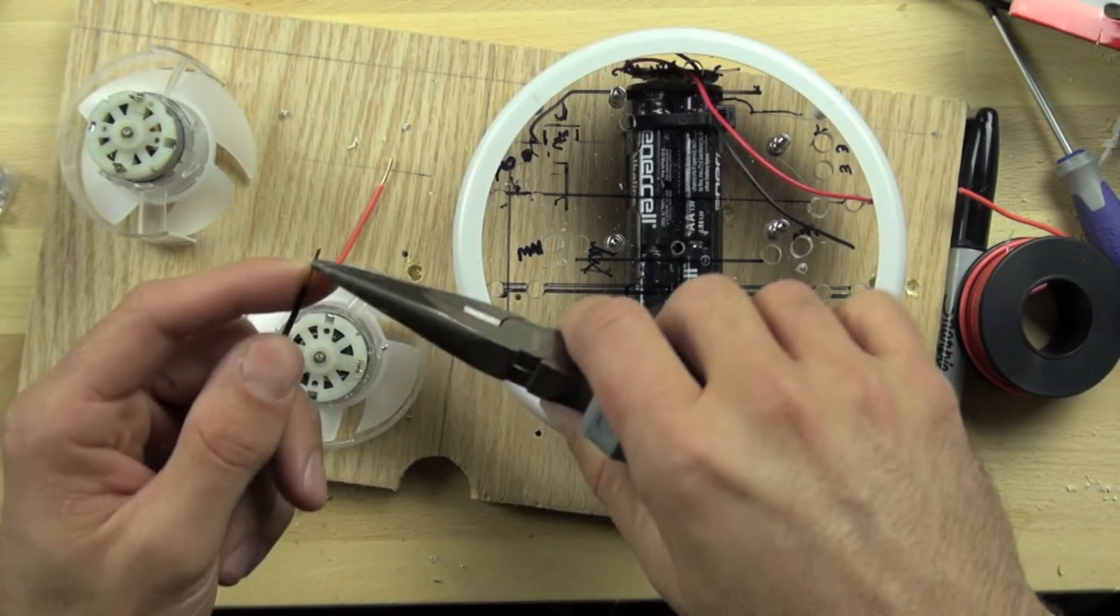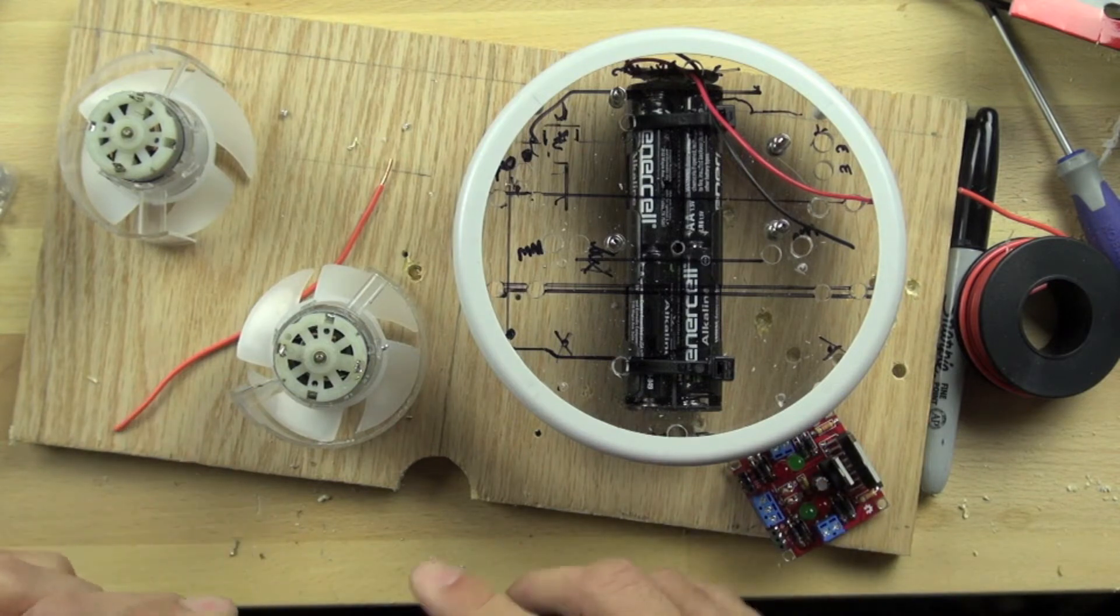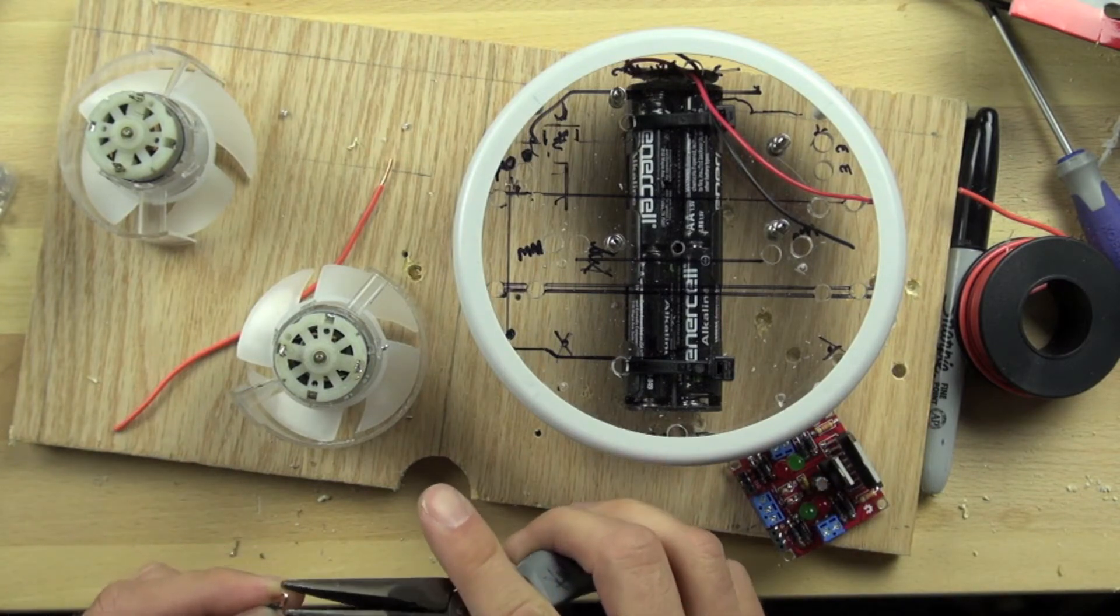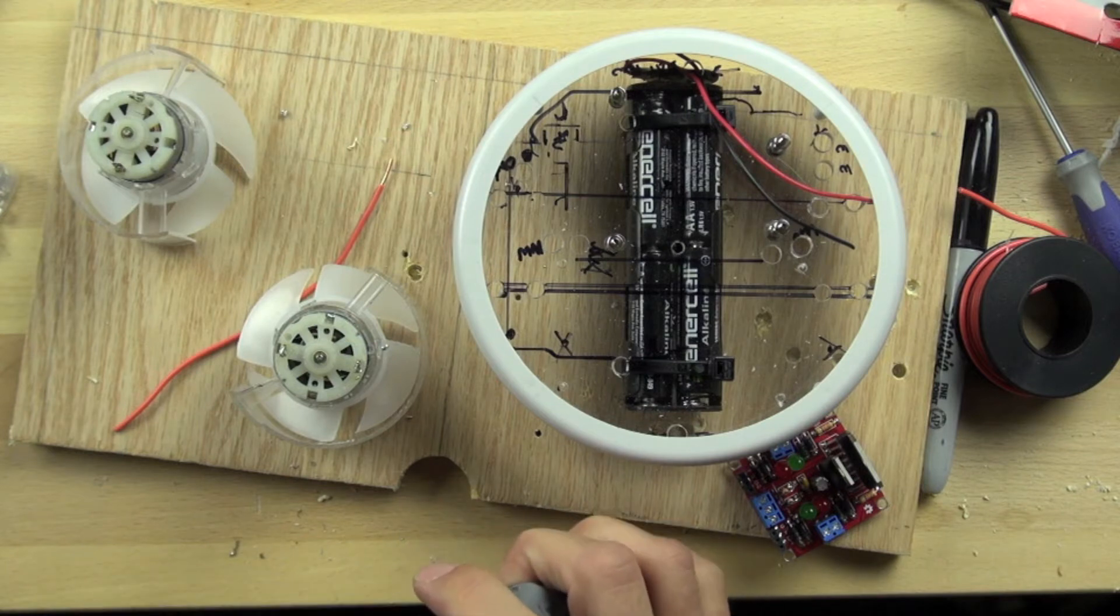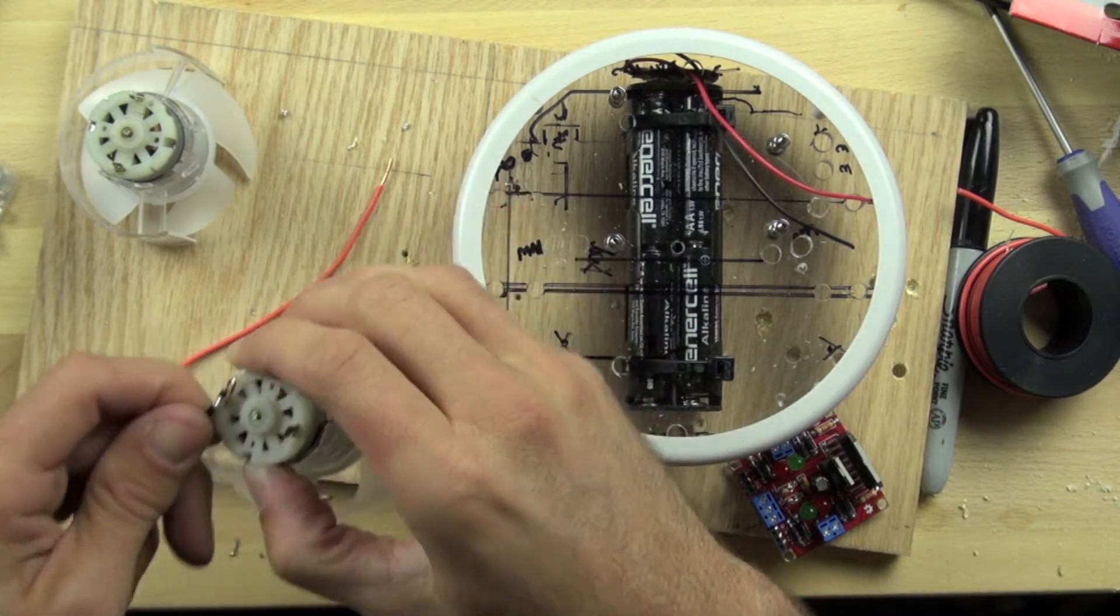And I'm going to bend the wire around like this. That way I can hook it around the contact for the motor.